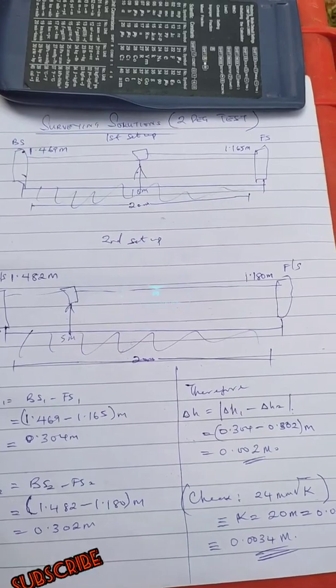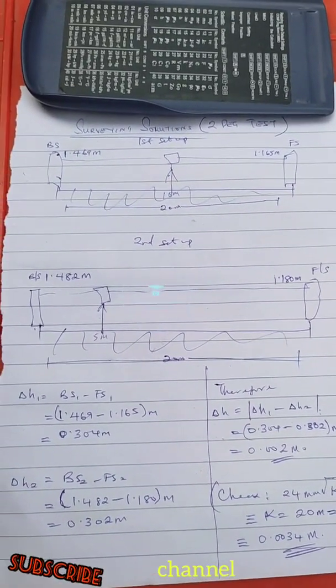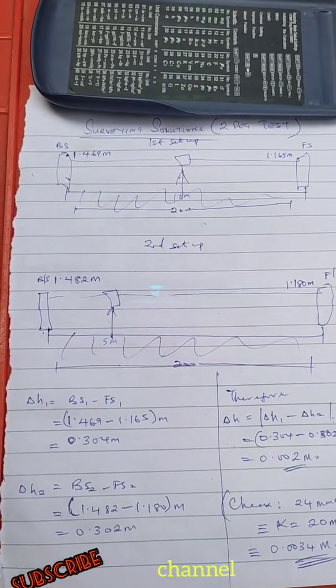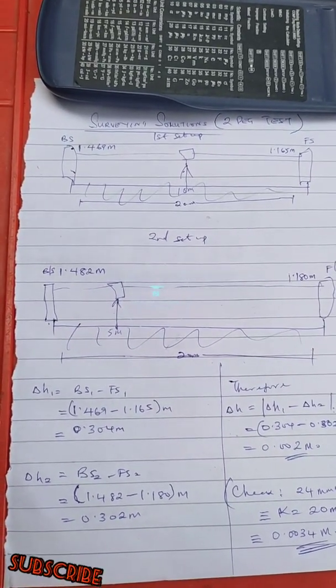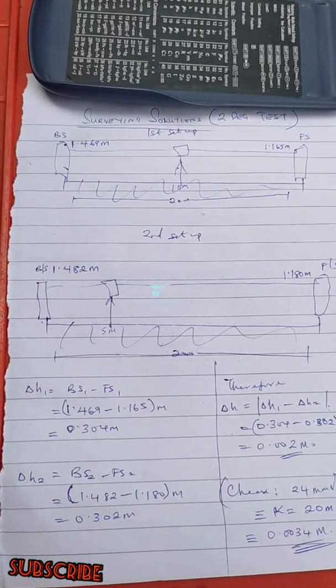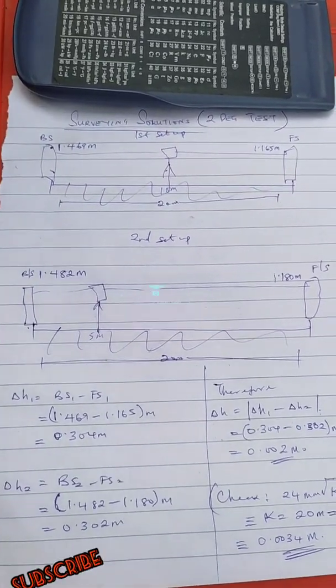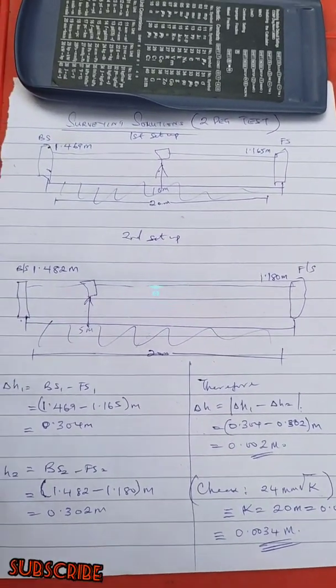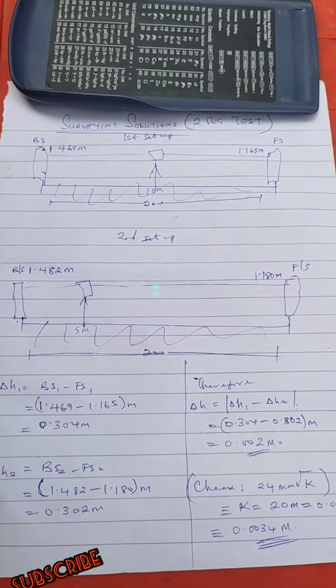Very good. Now how do we check? On the video we have actually talked about how to read the leveling staff. We have told you how to carry out computation using your rise and fall and then the height of collimation method. So the essence of this is just to show you that there is what we call a test of instrument.